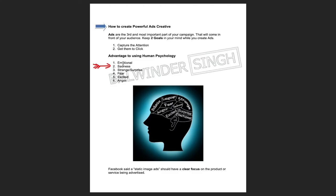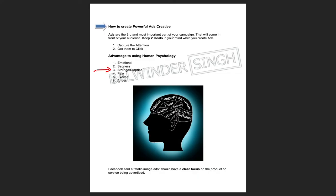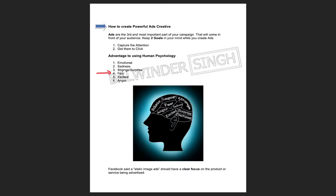The second point is sadness — try to add characters who are sad, based on your product. The third is strange and surprise — if you see something surprising, you will definitely stop to see what's going on. Fourth is fear, fifth is excitement, and sixth is anger. These six psychological triggers will help you capture customer attention. Think about it: if you see ads that look excited, surprising, anger-inducing, sad, or fearful, you will definitely stop and see what's going on.